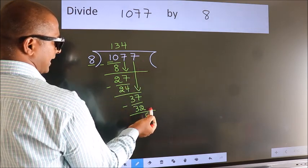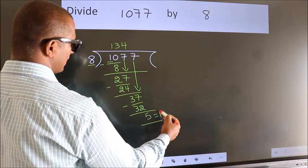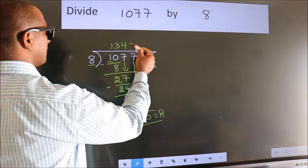No more numbers to bring it down. So, we stop here. This is our remainder. This is our quotient.